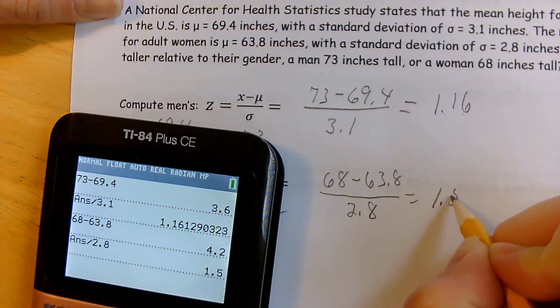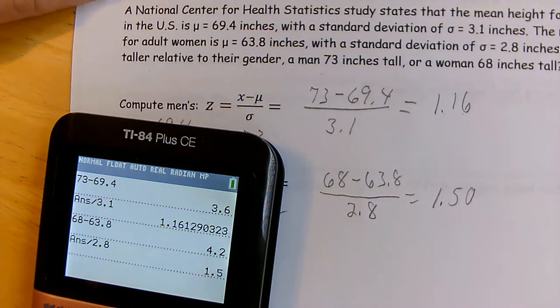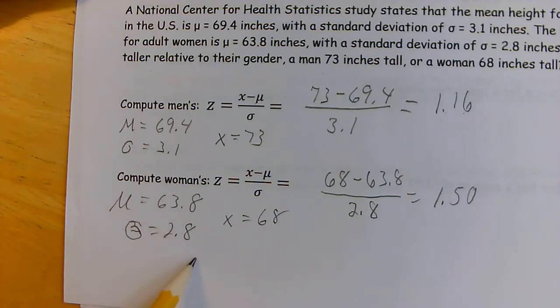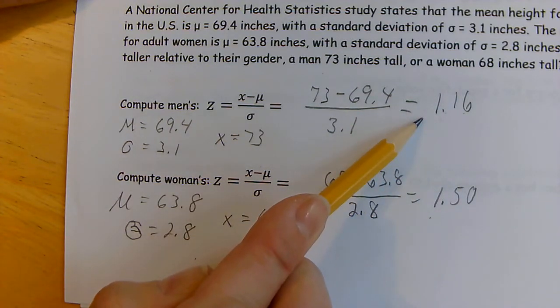A woman who's 68 inches tall is 1.5 standard deviations above average. So the woman is taller relative to her gender. Using the z-score you can clearly compare: this is 1.5 and this is only 1.16 standard deviations above average.